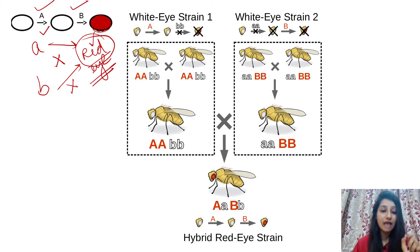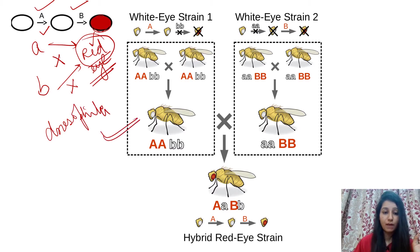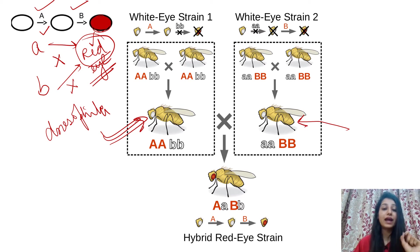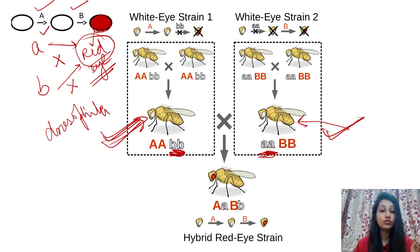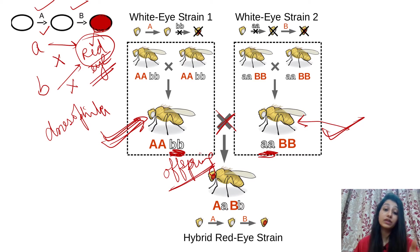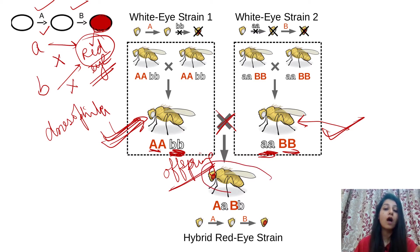Let's relate this with the complementation test using a Drosophila eye example. Here you can see that a white-eyed Drosophila is crossed with another white-eyed Drosophila. These two are white-eyed because in one, gene B is mutated, and in the other, gene A is mutated. When we cross these two, the offspring is red-eyed — which is surprising, since the parents are both white-eyed. This occurs because a normal gene A and normal gene B are both present in the offspring.